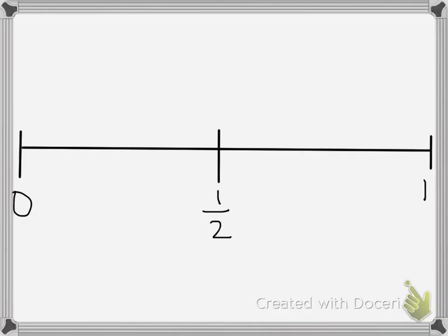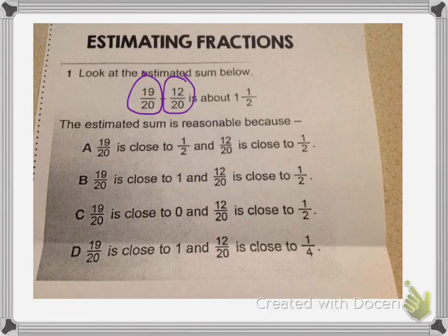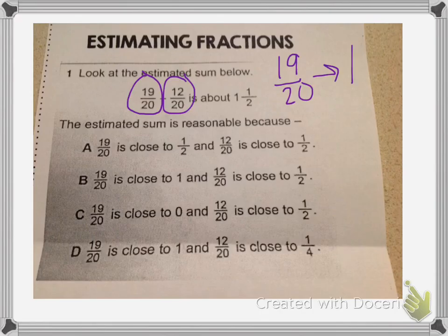I know that 19 twentieths would be close to 1. I know this because 20 twentieths equals 1, and 19 is only 1 away from 20. So I could say that 19 twentieths rounds to 1.